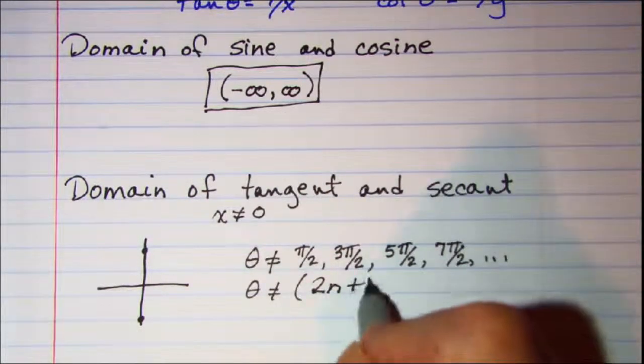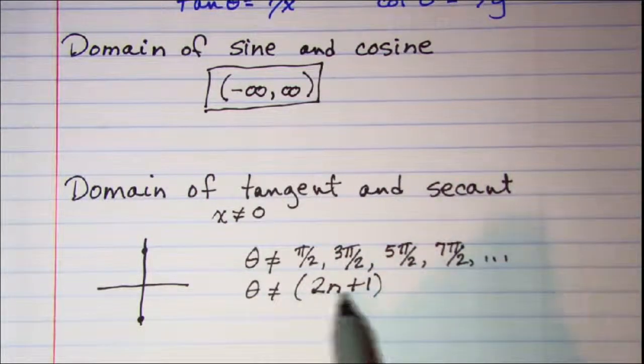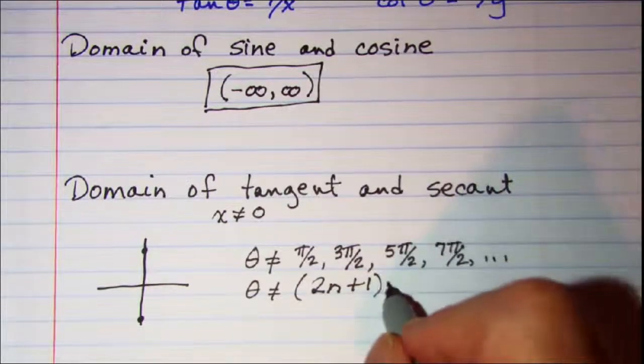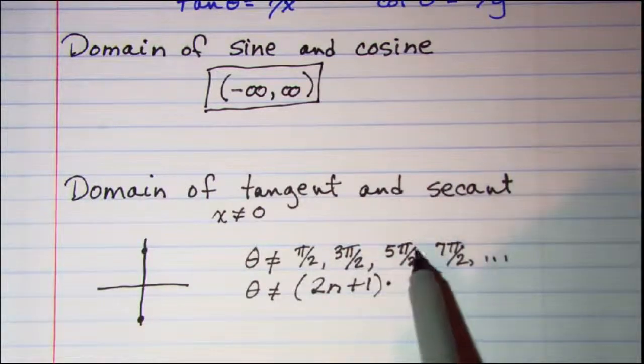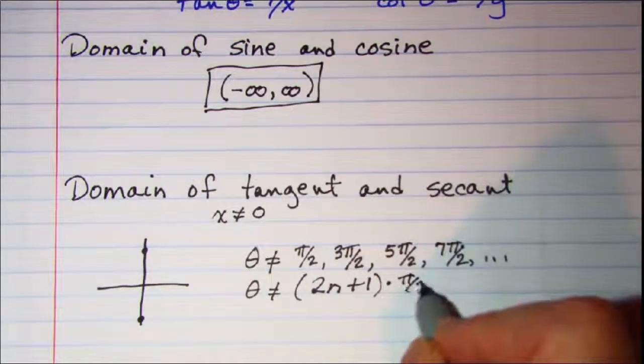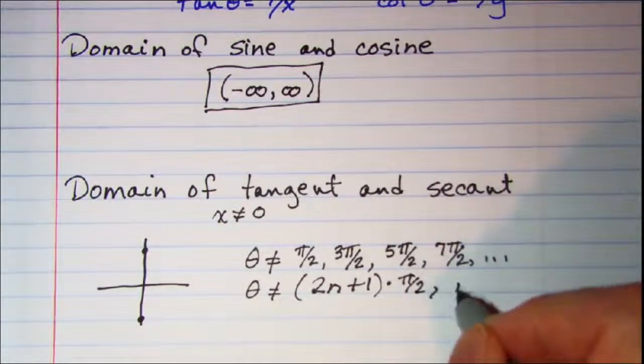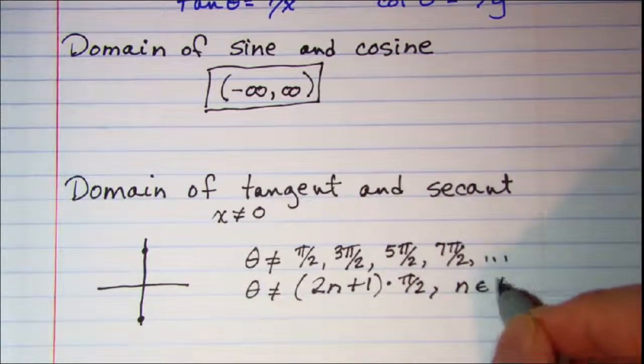2n plus 1 is how we designate an odd number, and then multiply that by the factor that doesn't change, which is pi over 2. So theta cannot equal (2n+1) times pi over 2, where n is an element of the integers.